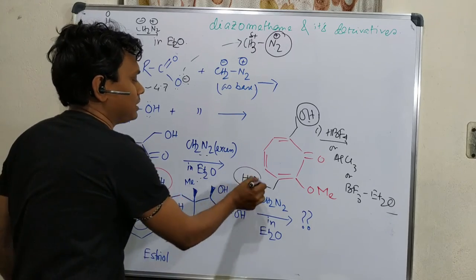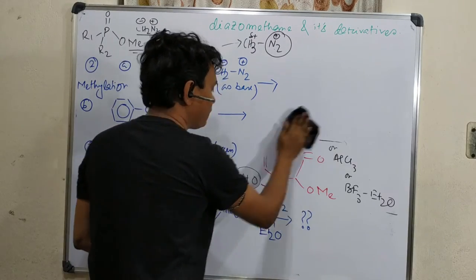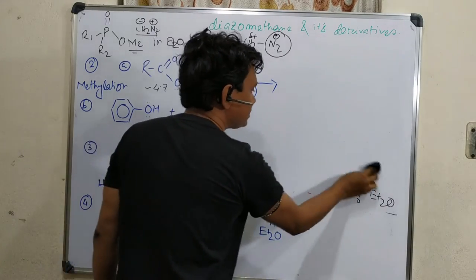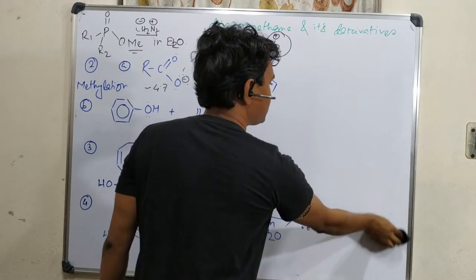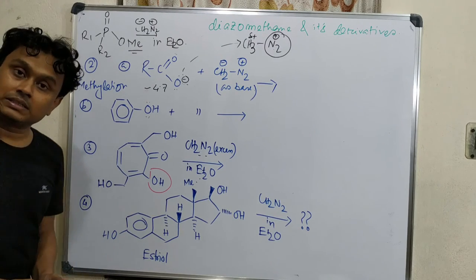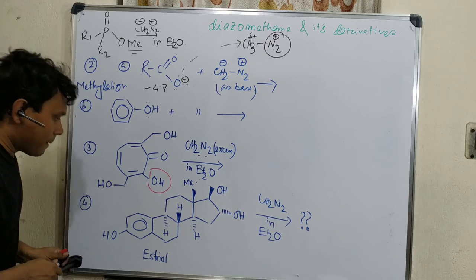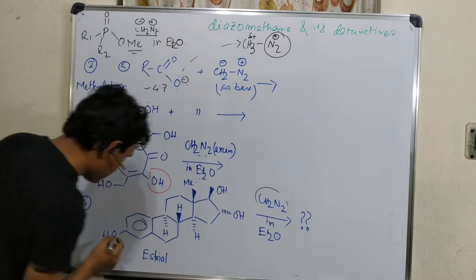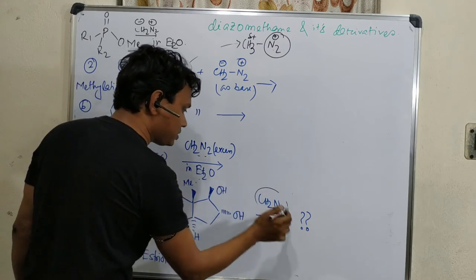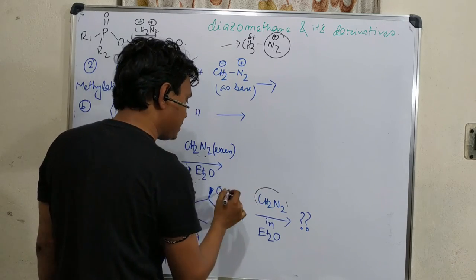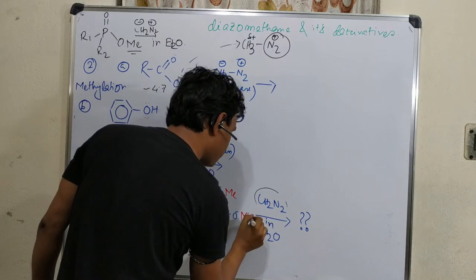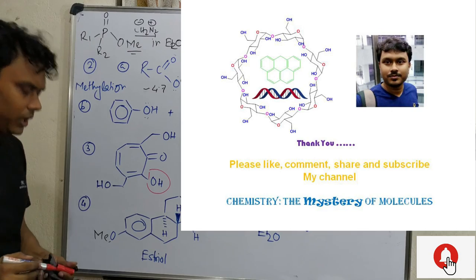Example number four: estriol is actually found in the urine of pregnant ladies, produced as a hormonal degradation product. It is only available in case of pregnant ladies, so it needs to be detected. One strategy is if we provide diazomethane only, then this position will be methylated. But if we need to activate these two positions, in presence of Lewis acid or non-nucleophilic protic acid is required for the methylation of these two positions. Keep this in mind, such type of questions may come during your exam.